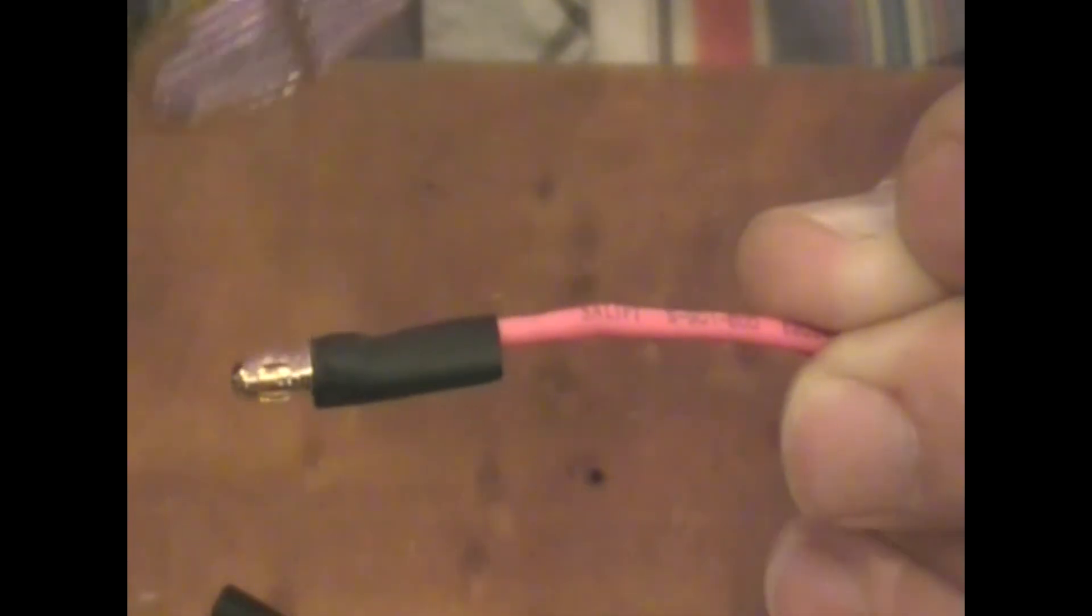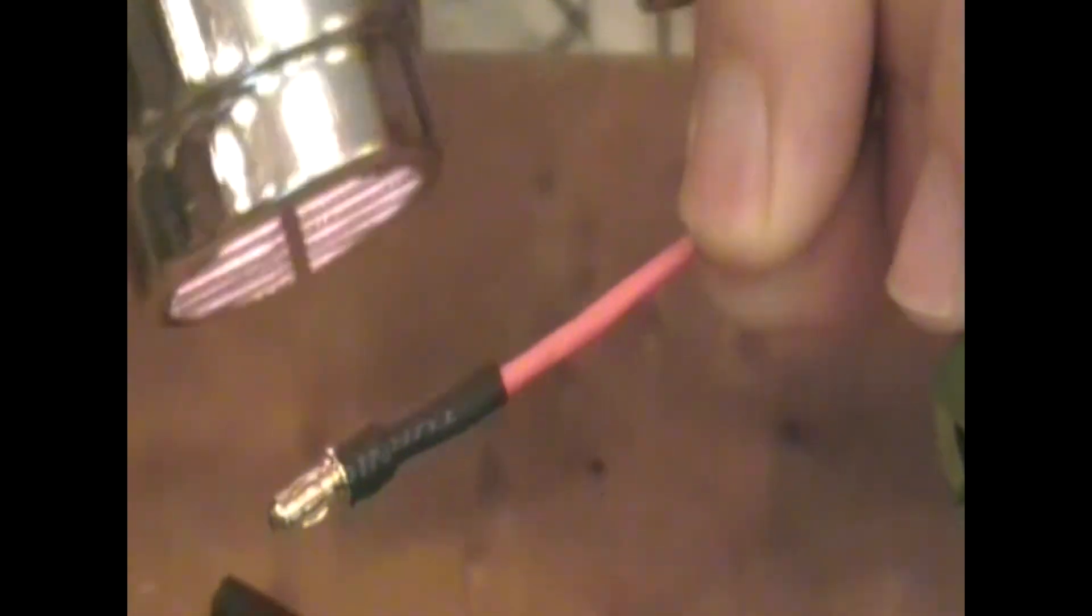And then I'll use my heat gun to shrink down my tube. You can either use a lighter or your torch but I prefer to use the heat gun.